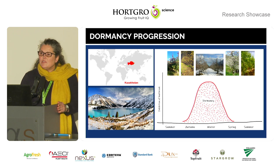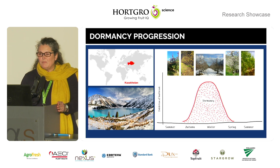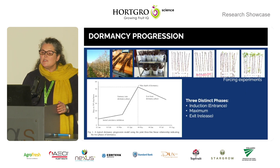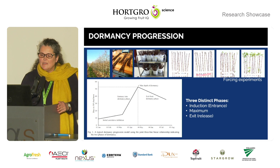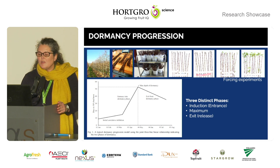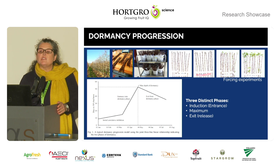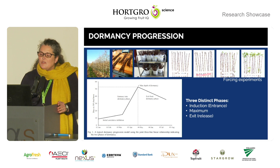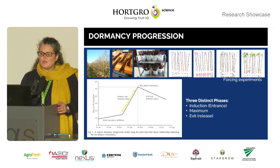Dormancy is not just a survival tool, but also the plant's reset button to allow for synchronised growth and bud break in the spring. We can measure this dormancy progression very successfully in the laboratory by collecting one-year-old shoots in the orchard throughout the winter period and incubating them at optimal growth conditions. We then monitor how long it takes for these buds to break as an indication of how dormant they are, and we use this data to plot dormancy progression curves, which clearly shows three phases of dormancy.